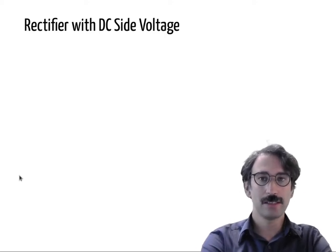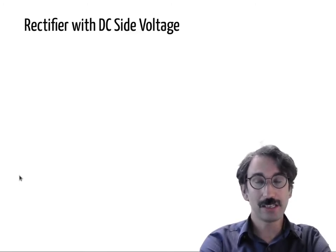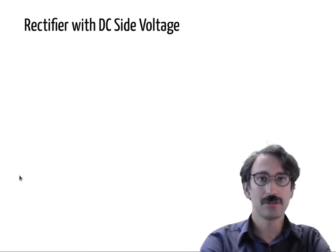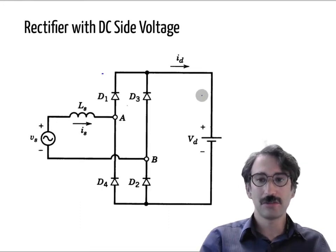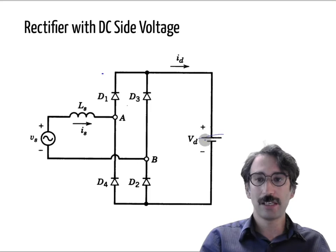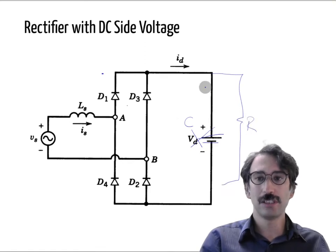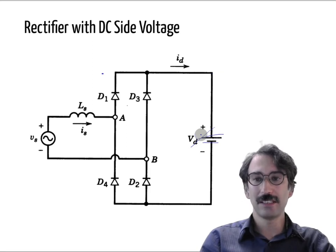Today we will talk about a more realistic case. In previous videos we have seen that if a rectifier is connected to a large inductance load or modeled as an ideal current source, it draws a square waveform current. But what happens if we have a DC side voltage? It could be a DC motor, or even a large capacitor with a resistive load, where the RC time constant is much larger than the period, so the voltage change is small and it can be simplified as a voltage source.